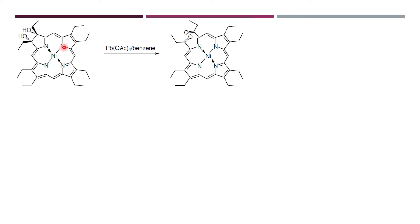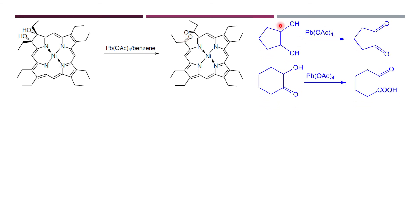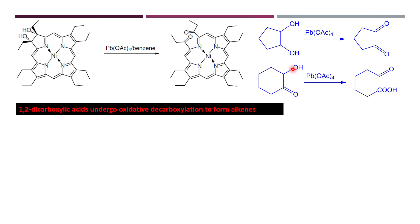An interesting example uses octaethyl porphyrin of nickel, where the pi bond on the pyrrole ring has undergone hydroxylation. Treatment with lead tetraacetate cleaves this bond, forming a molecule with applications in porphyrin chemistry. Taking a 1,2-diol, oxidative cleavage occurs. For an alpha-hydroxy ketone substrate, the alpha-hydroxy side becomes a carboxylic acid and the other carbon becomes an aldehyde.